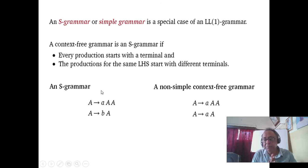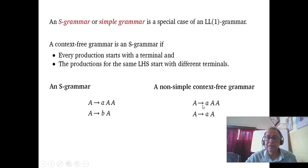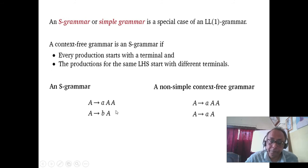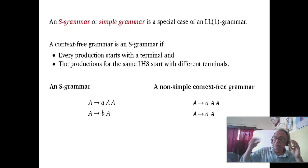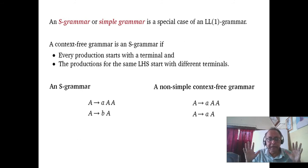In S grammar, any rule on the right-hand side starts with a terminal, and no other rule starts with the same terminal. Here it is GNF but not S grammar. But if it is S grammar, it is very easy for top-down parsing from left to right — if you see a terminal you know which rule to fire. That is very easy. Some programming constructs can be done by S grammar, not all. Greibach Normal Form, S grammar, and Greibach grammar are all different forms to put your rules for easier parsing.